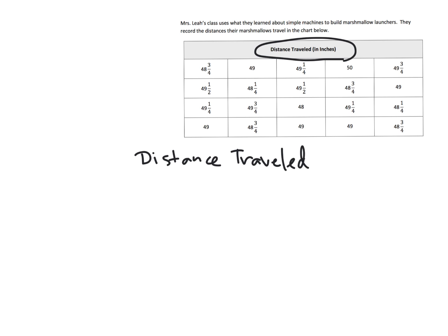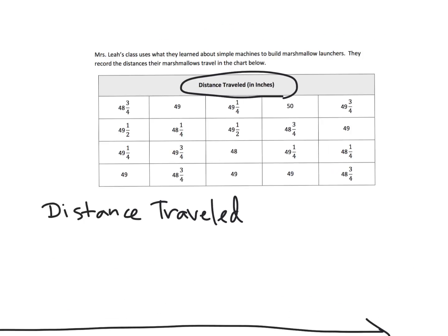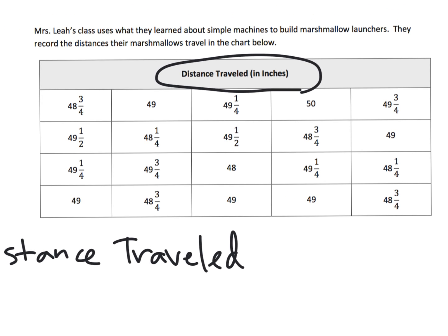And then we are going to make our number line. Now what we need to do is we need to look at our data up here and find the lowest number and the highest number. So far the lowest number is in the 48s—there's a 48 and a half, there's a 48 and three quarters, there is exactly a 48. So our lowest number is 48.